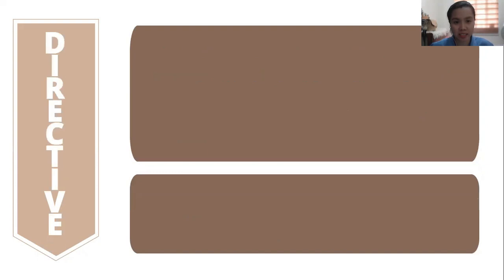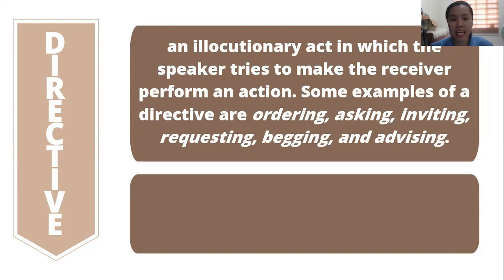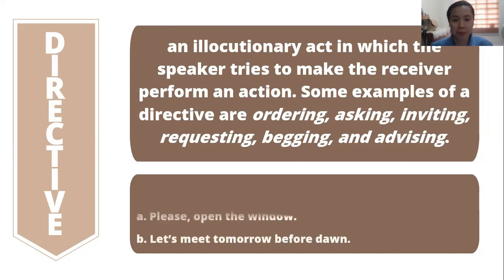Next type is directive. It is an illocutionary act in which the speaker tries to make the receiver perform an action. It's not like assertive that it is either true or false, but in directive, it is either to be followed or not. Some examples of a directive are ordering, asking, inviting, requesting, begging, and advising. Examples: 'Please open the window.' And 'Let's meet tomorrow before dawn.'